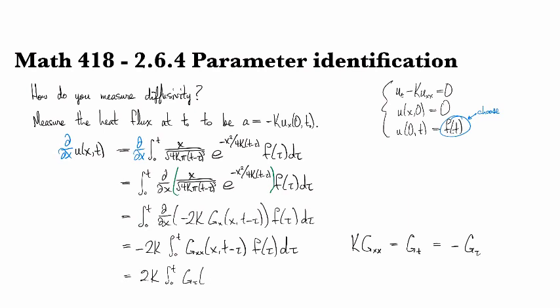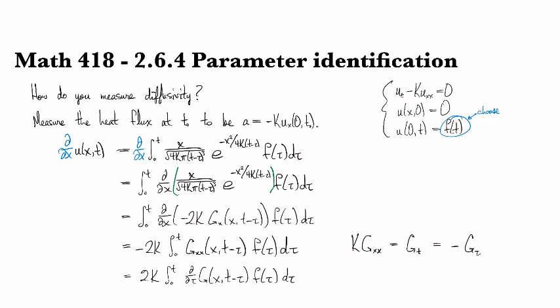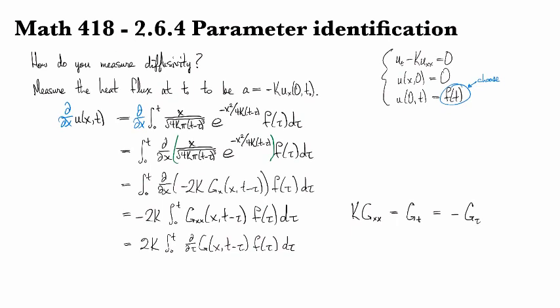Actually, here, let me rewrite that as gd tau. There we go. And now that we've got this in play, I can take this guy and move him over to being a derivative on the f using integration by parts.